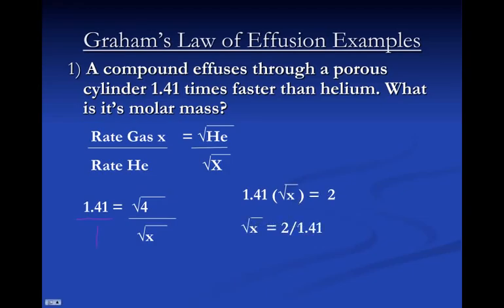So then we have 1.41 times the square root of the molar mass of X equals 2. Square root of X equals 2 over 1.41. You can then square it. You end up with 2.01 grams per mole, which leaves us with hydrogen H2 gas. So if you're asked to find the identity of that.